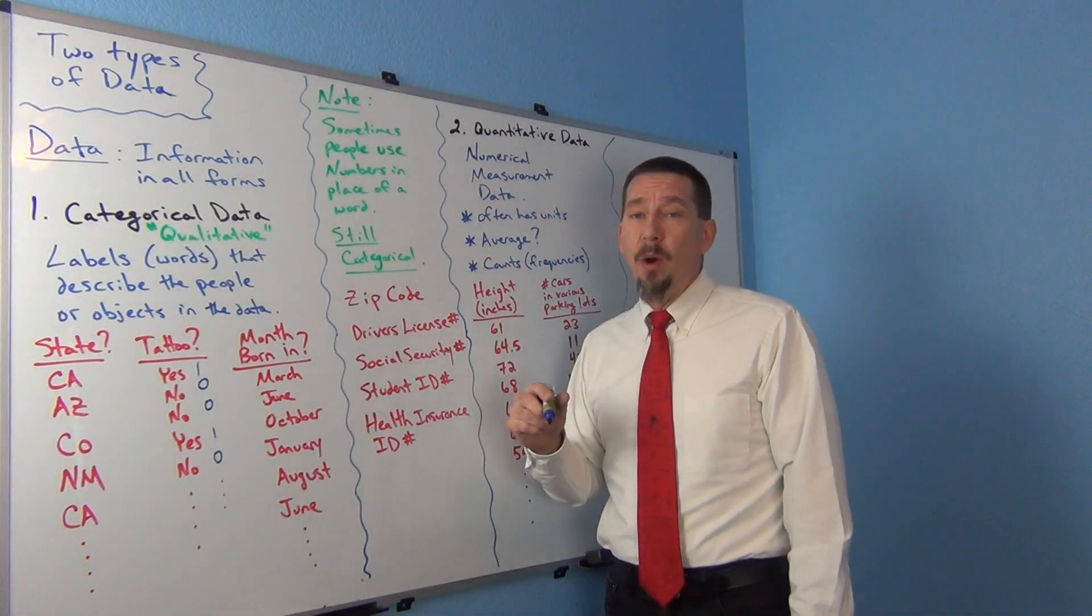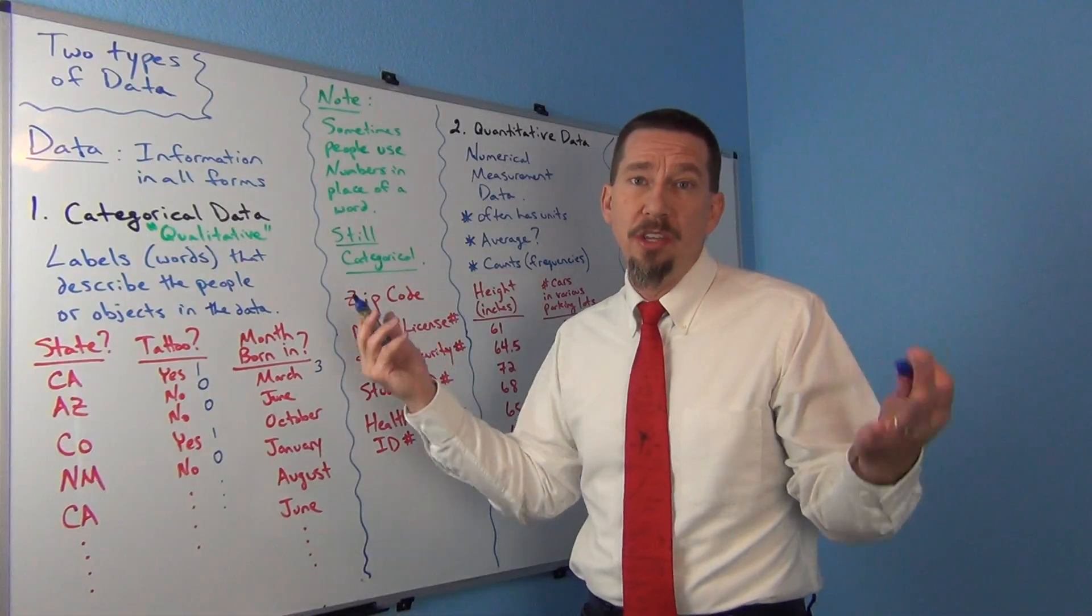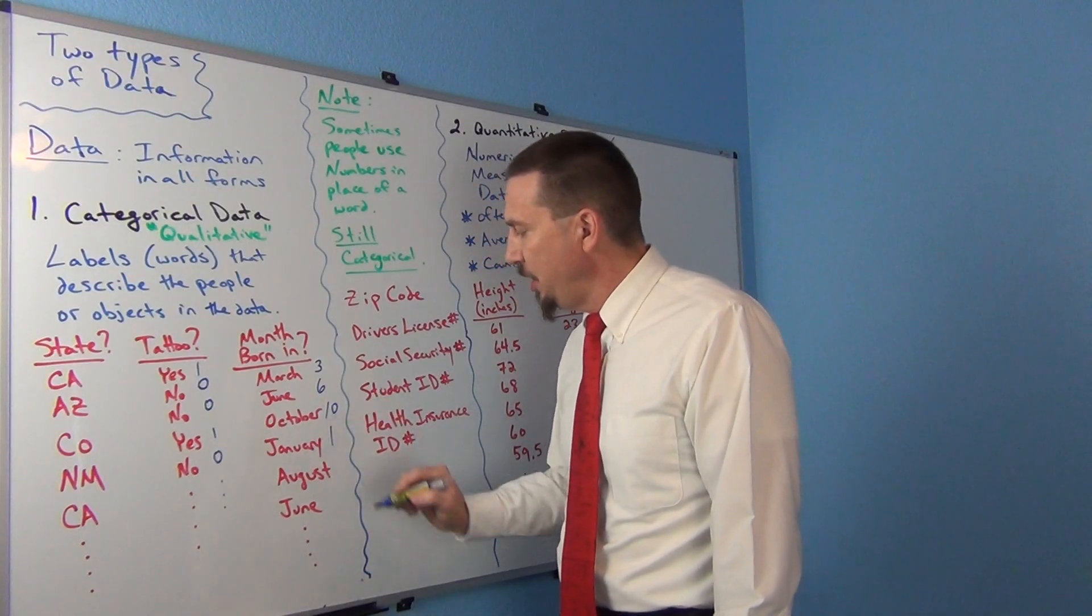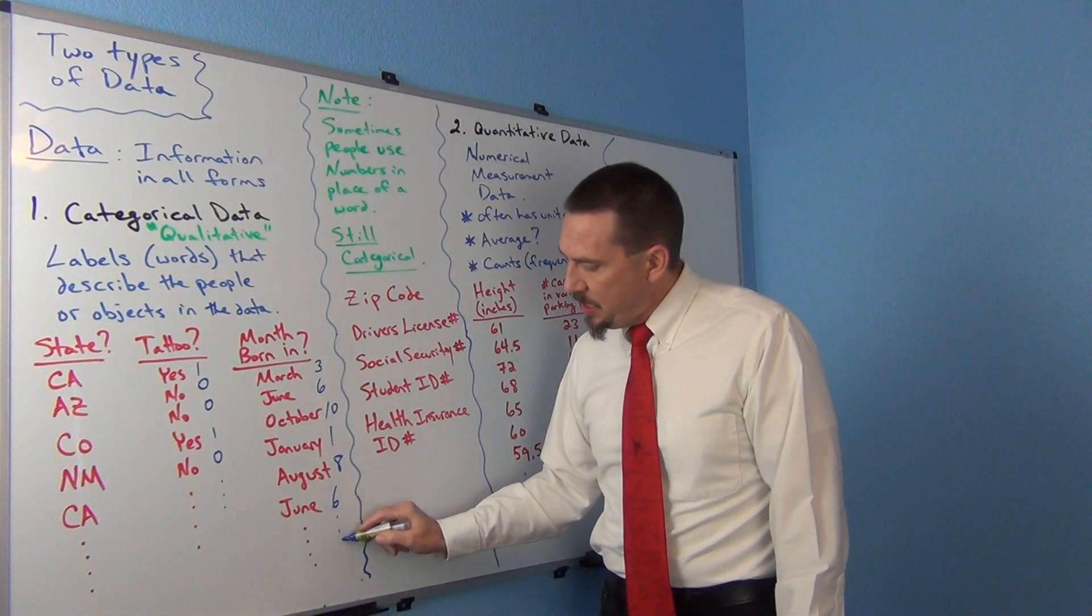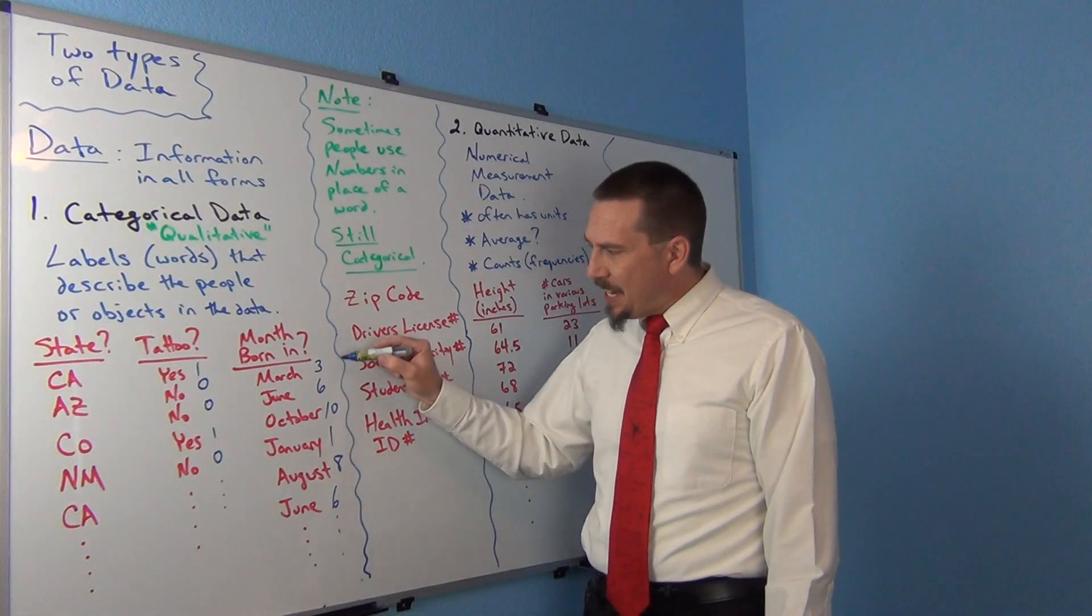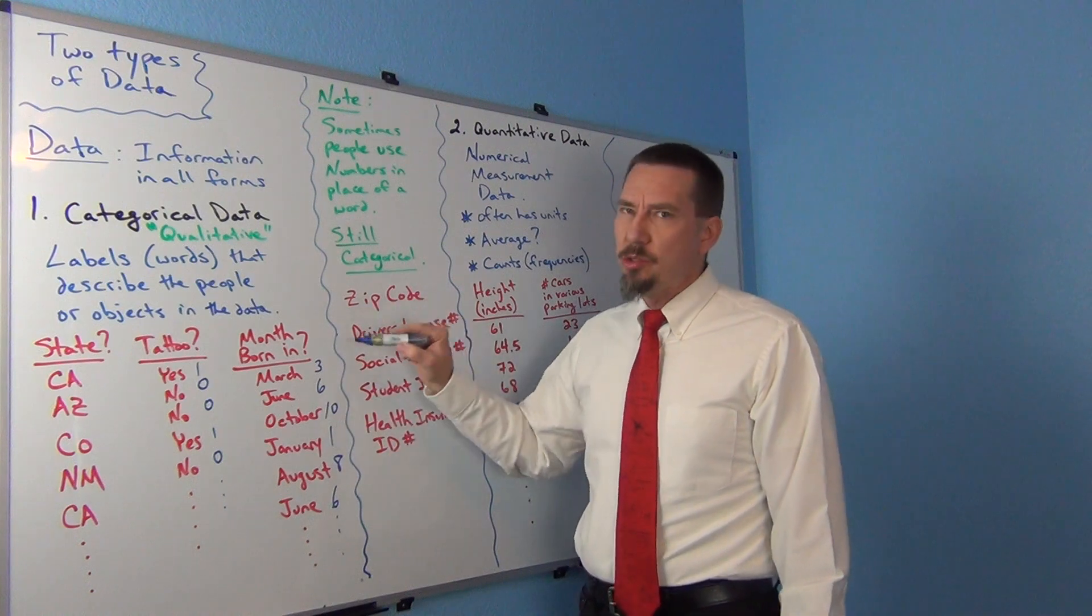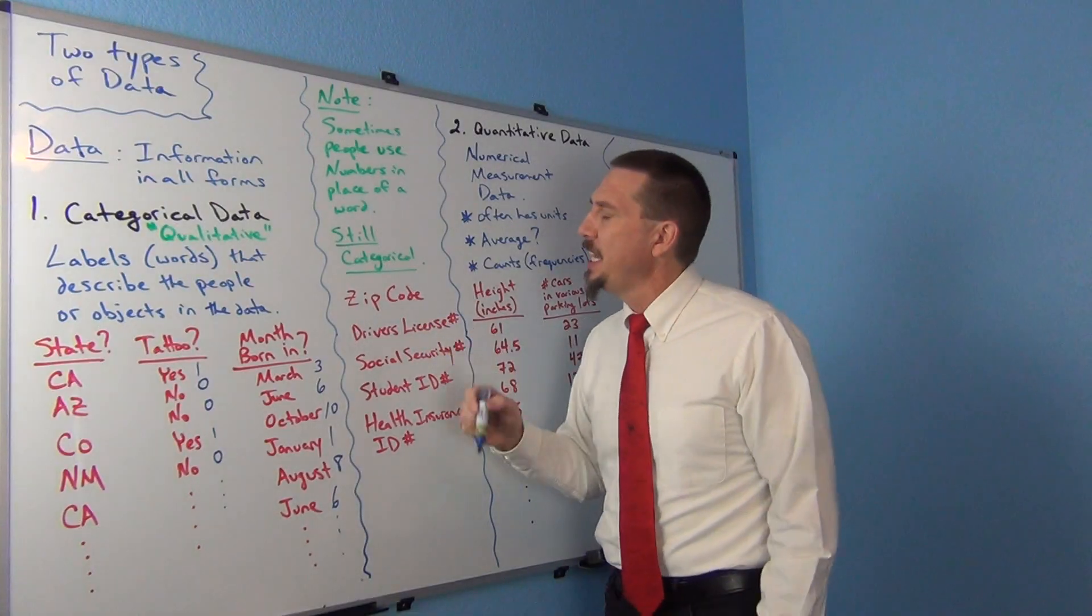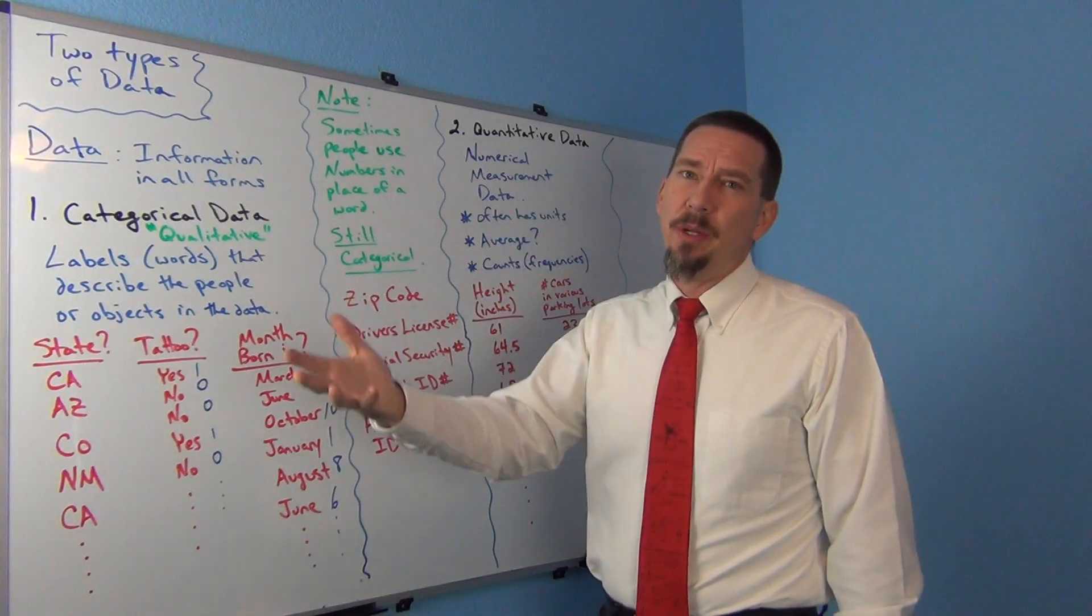Now, those are numbers, but they're not really measuring something. They're in place of a word. The number one means yes, and the number zero means no. So somebody's using numbers in place of a word. That's still considered categorical data. These numbers really aren't measuring something. They're basically just used as a placeholder for a word. Same thing with months. Instead of saying what month were you born in, someone said they were born in March. You might see someone just write three there. Because March is the third month of the year.